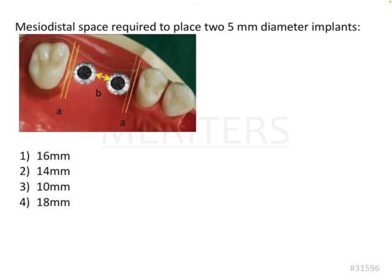The question is: what is the mesiodistal space required to place two 5mm diameter implants? This is a conceptual question and a very good one. In this clinical scenario, the canine and first premolar are present, the second molar is present, and the second premolar and first molar are to be replaced.